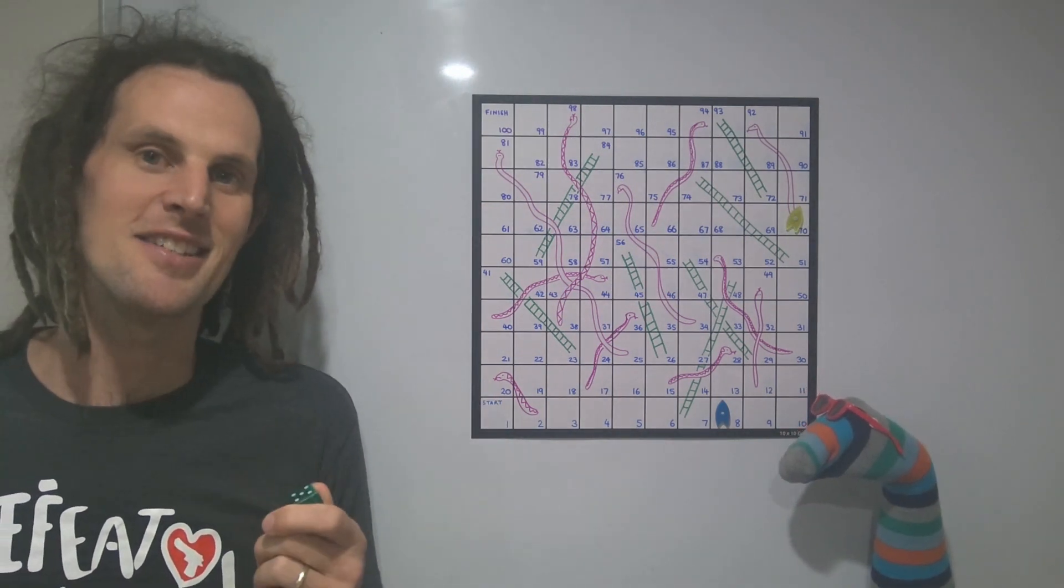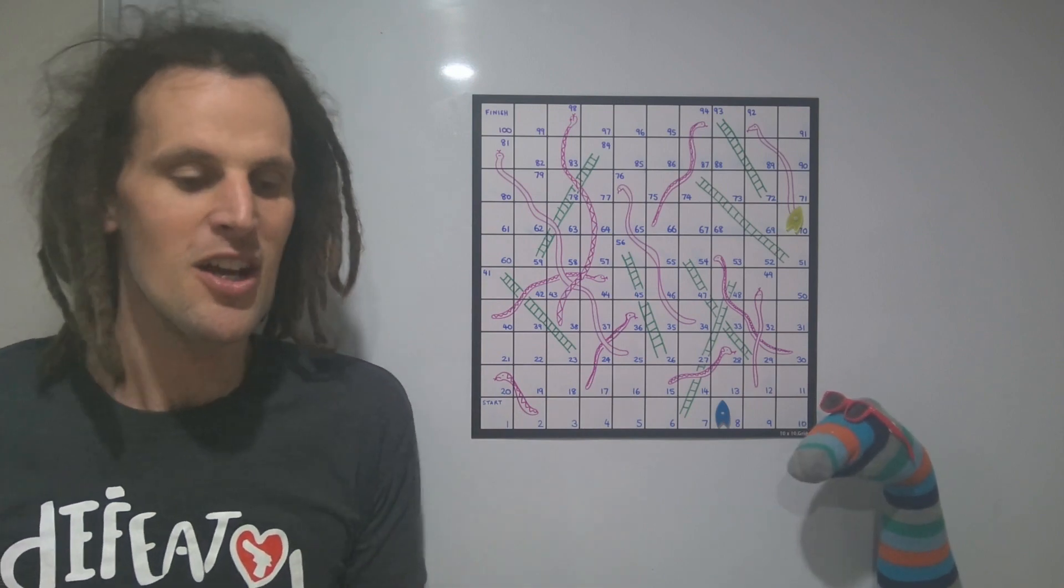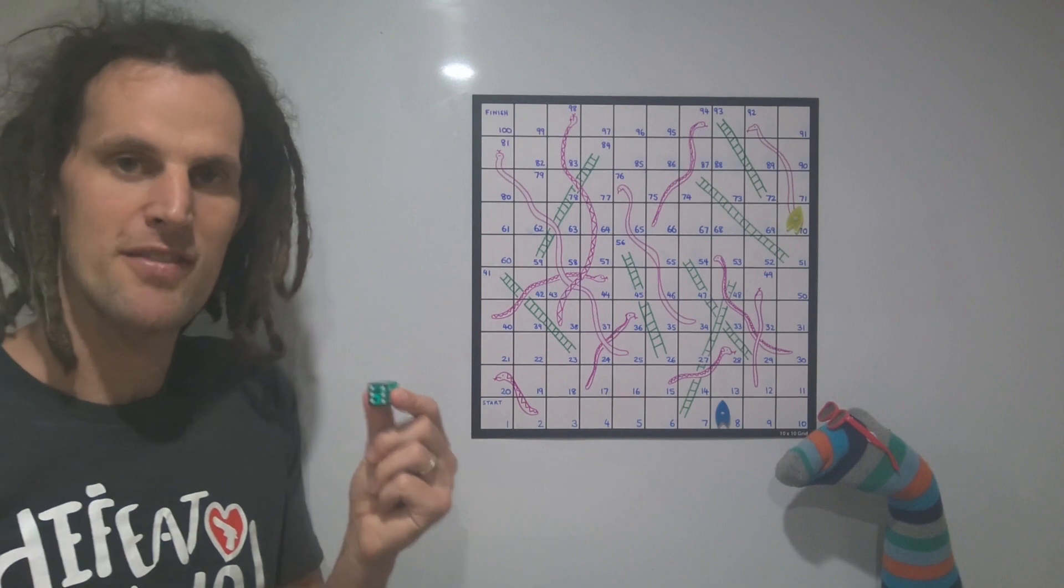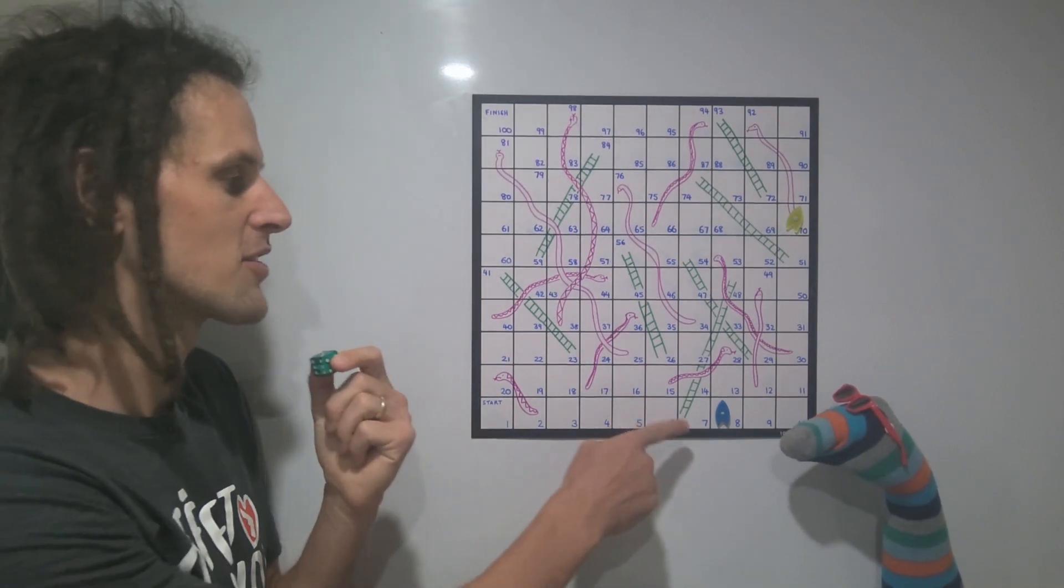Mathematical Snakes and Ladders is played similar to traditional Snakes and Ladders. You roll a dice, and then you apply that number with one of the four operations, based on the square you're currently on.